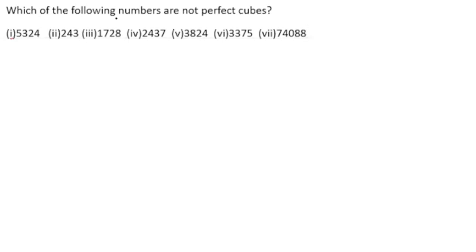Which of the following numbers are not perfect cubes? We need to find out which numbers are perfect cubes or not. We know that if any number is multiplied by itself three times, then it is a perfect cube. Let us start with the first number, 5324.